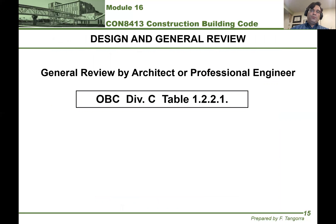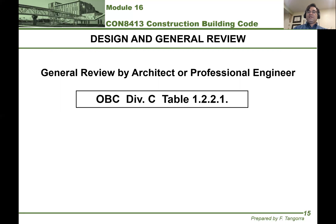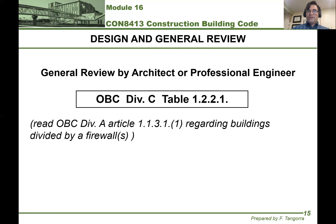The other thing I'd like to point you towards is Table 1.2.2.1 under Division C of the Building Code. It's an interesting table because it outlines all the requirements of general review, whether by architects or professional engineers or both. You'll be able to see what the building code says must be reviewed by an architect only, by a professional engineer only, or by both — and the list is very interesting. Please also read the article regarding buildings divided by firewalls: Division A, 1.1.0.3.0.1.1.